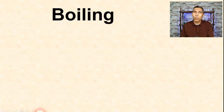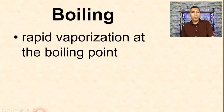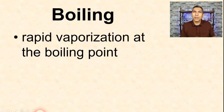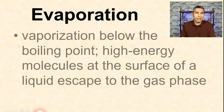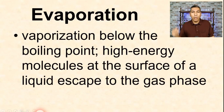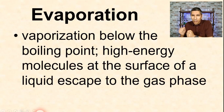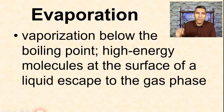You might be thinking of other words like evaporation or boiling — these are the two types of vaporization. Boiling is essentially rapid vaporization at the boiling point. If you've seen water boiling on the stove, you know this is a very fast process — the molecules are churning around and you can see it. On the other hand, evaporation is a much slower process — vaporization that takes place below the boiling point, where high-energy molecules at the surface of a liquid jump out to the gas phase.